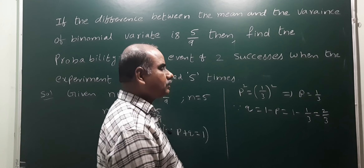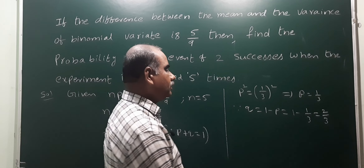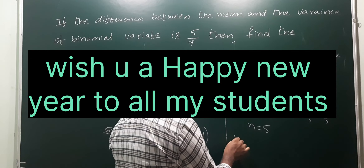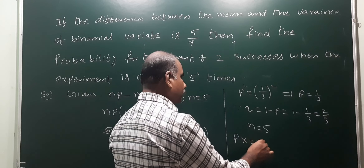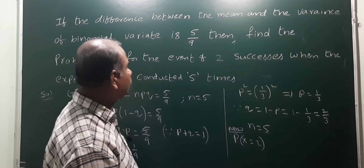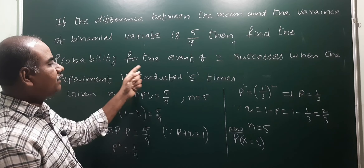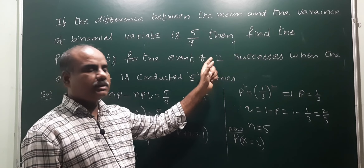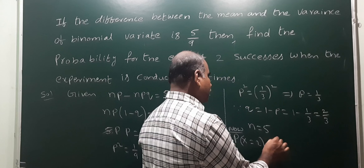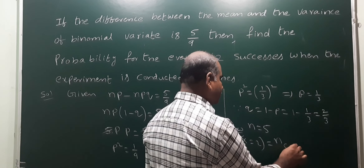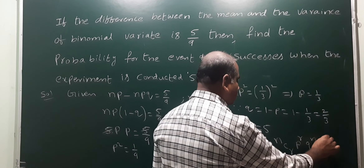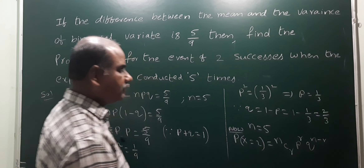Now we have p equals 1/3, q equals 2/3, and n equals 5. We need to find P(X=2). Using the binomial distribution formula: P(X=r) equals nCr times p to the power r times q to the power (n minus r).